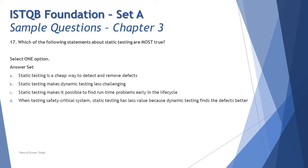We have four options to validate — which is true and which is false. Option A: 'Static testing is a cheap way to detect and remove defects.' Yes, that's one of the cheapest options, as it starts much earlier in the life cycle, reducing the cost of finding and fixing defects. When the first document is created, fixing a bug is less costly.